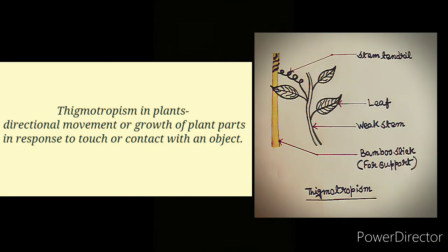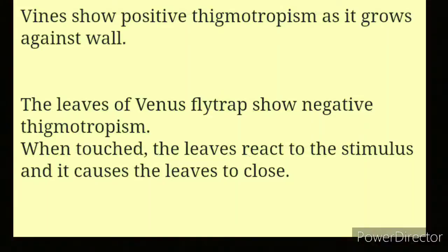The directional movement or growth of plant parts in response to touch or contact with an object is called thigmotropism in plants. Vines show positive thigmotropism as they grow against a wall, wrapping around an object for support.